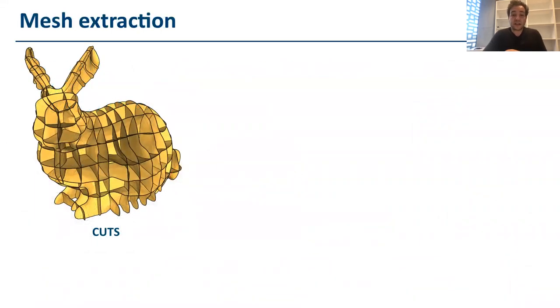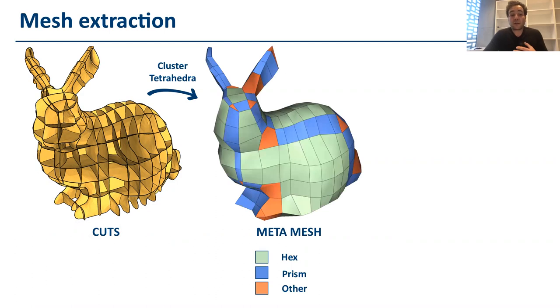In short, given a set of cuts operated on these models, we agglomerate our volumetric representation, for example, a tetrahedral mesh, and we agglomerate the tetrahedra that compose this mesh into multiple clusters.